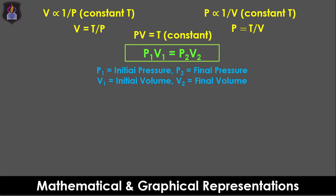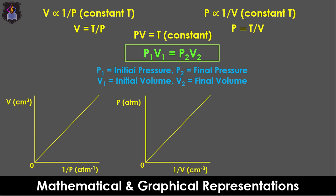If we plot a graph of V against 1/P, it gives a straight line graph starting from and passing through the origin. Also, a plot of P against 1/V gives a parabolic curve with a negative slope as shown on the screen.